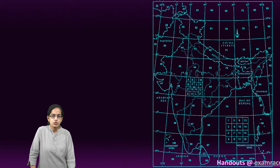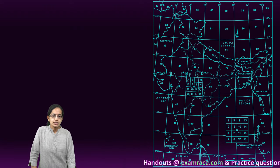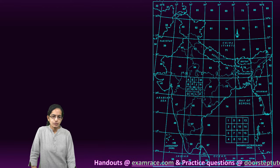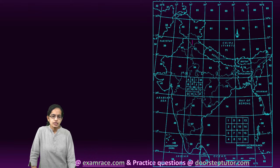The sheet number 53J16 refers to the specific region that would be covered. Sheet number 53 is the starting reference, and from there the area is subdivided further.